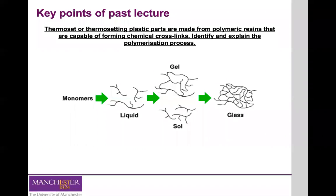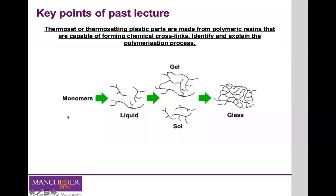By supplying an appropriate form of energy — which can be heat or light, such as UV light as used in VAT photopolymerization — we initiate an exothermic reaction that transforms this liquid of low molecular weight into a three-dimensional, fully cross-linked, high molecular weight polymer that is fully solid. Moving from this liquid resin into a fully cross-linked three-dimensional network encompasses two different stages, normally classified as gelation and vitrification.